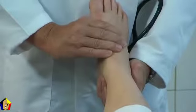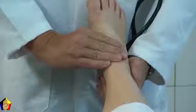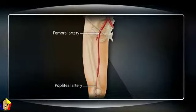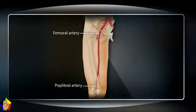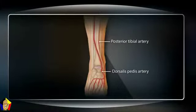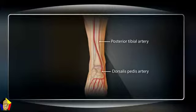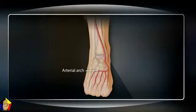In the legs, arterial pulses can usually be felt in four places: the femoral artery just below the inguinal ligament, midway between the superior iliac spine and the symphysis pubis; the popliteal artery, palpable just behind the knee; the dorsalis pedis artery on the dorsum of the foot, just medial to the extensor tendon of the big toe; and the posterior tibial artery behind the medial malleolus of the ankle. An interconnecting arterial arch protects the circulation of the foot.